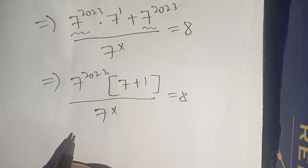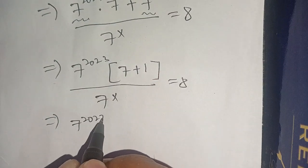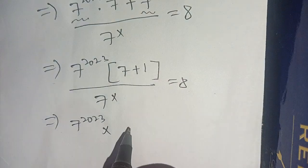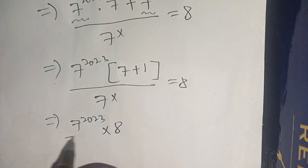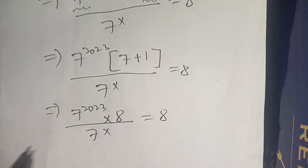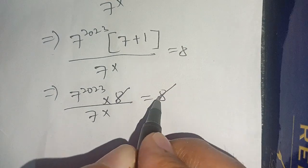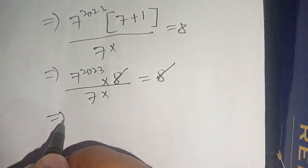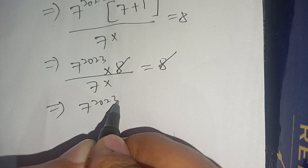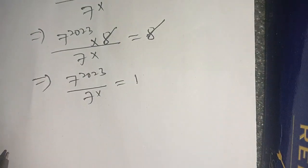Now in the next step we simplify: 7 power 2023 times (7 plus 1) becomes 7 power 2023 times 8. The next step will become 7 power 2023 times 8 divided by 7 power x is equal to 8.